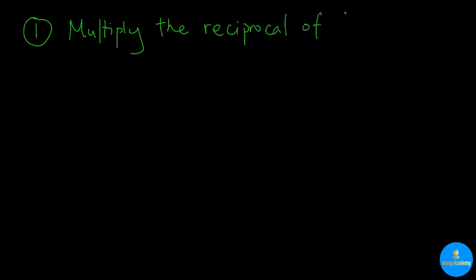There are two major steps in pivoting. First, multiply the reciprocal of the pivot entry to the pivot row.